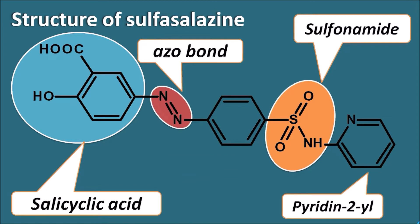In this way, sulfasalazine is a sulfonamide with an extra salicylic acid, which is connected to the para portion of the benzene of salicylic acid by an azo linkage.